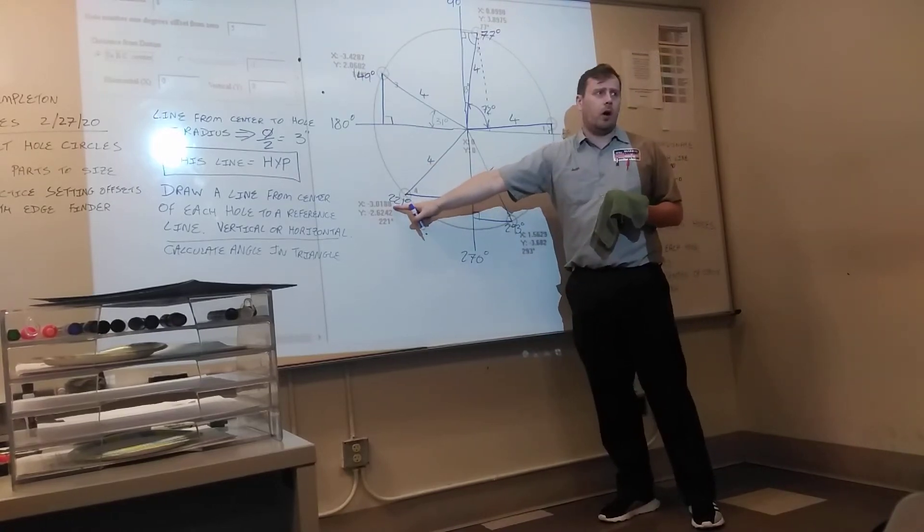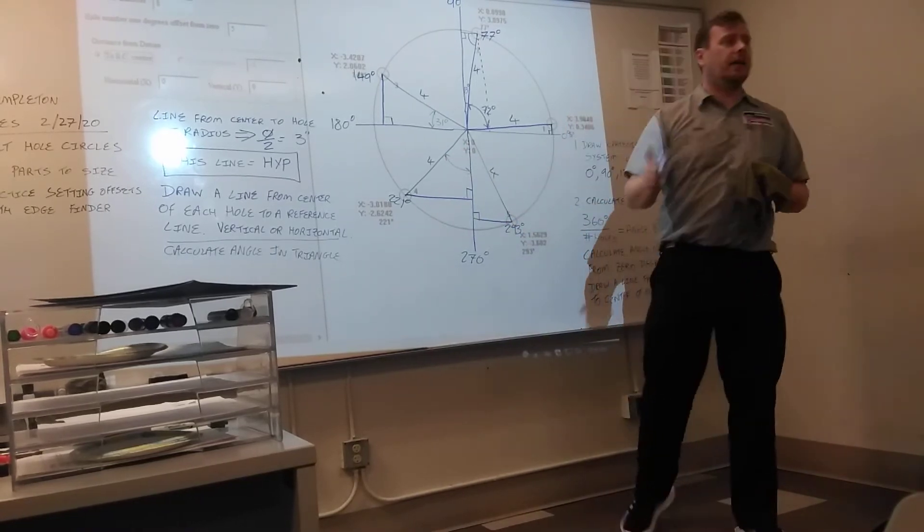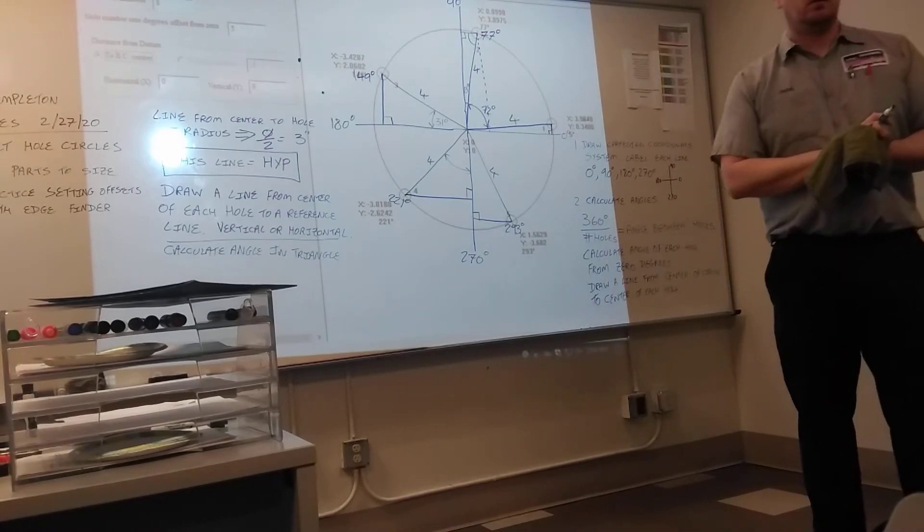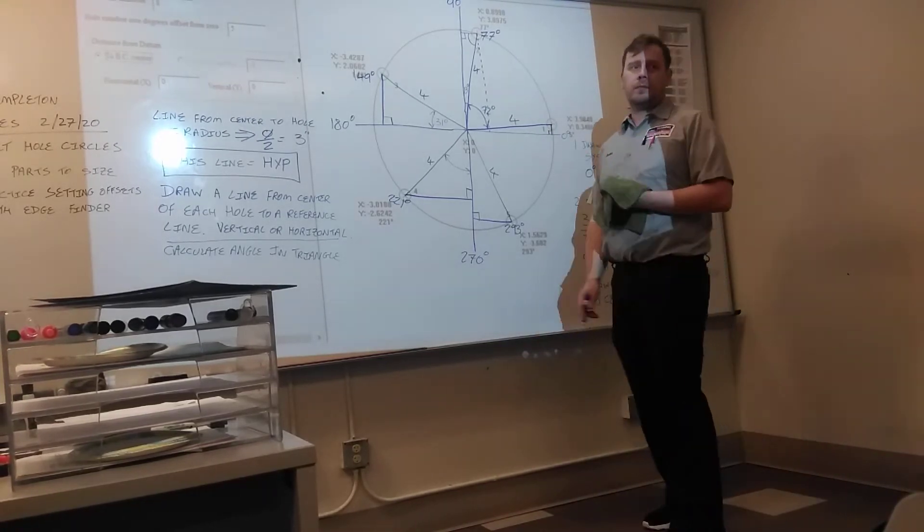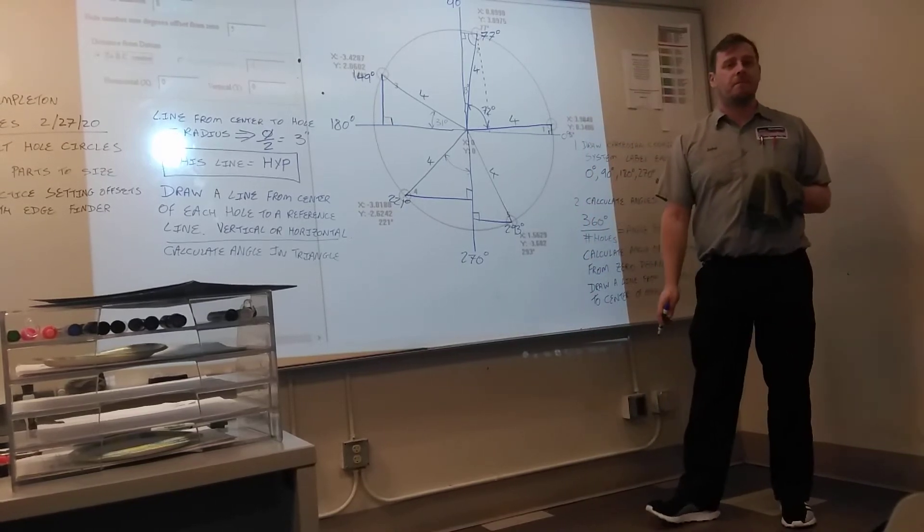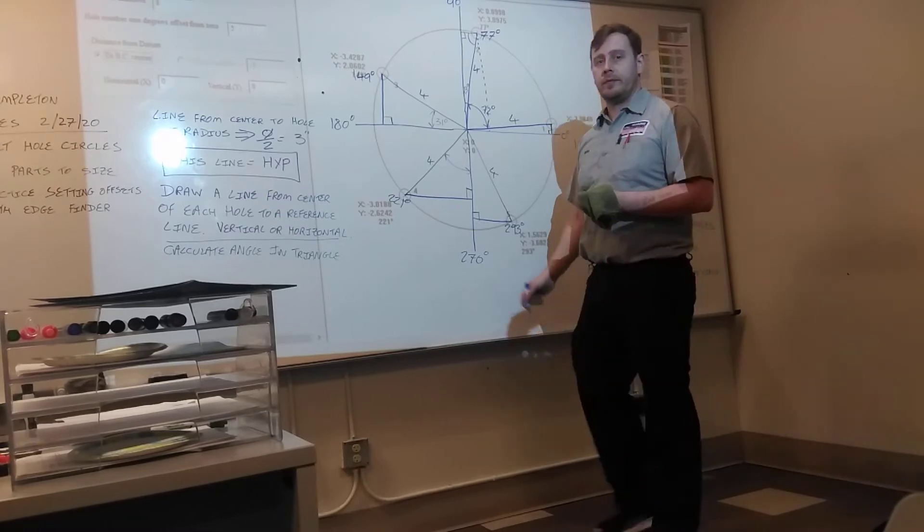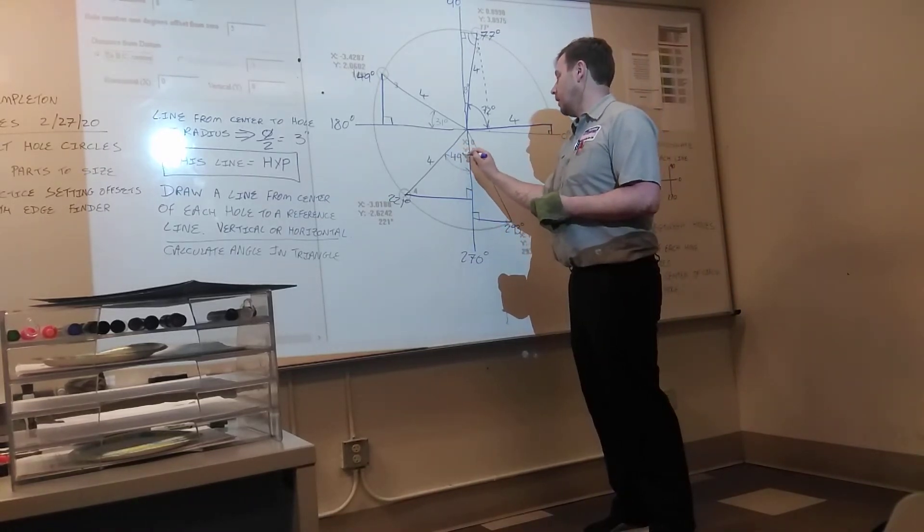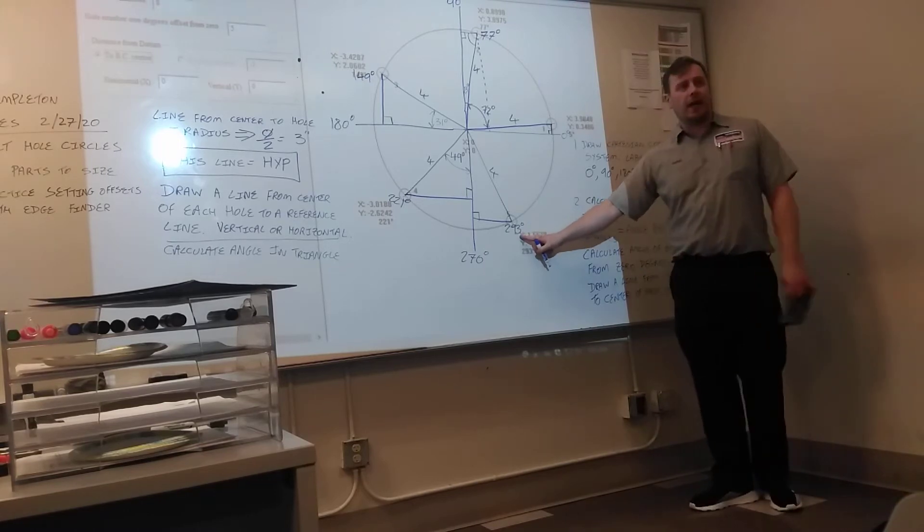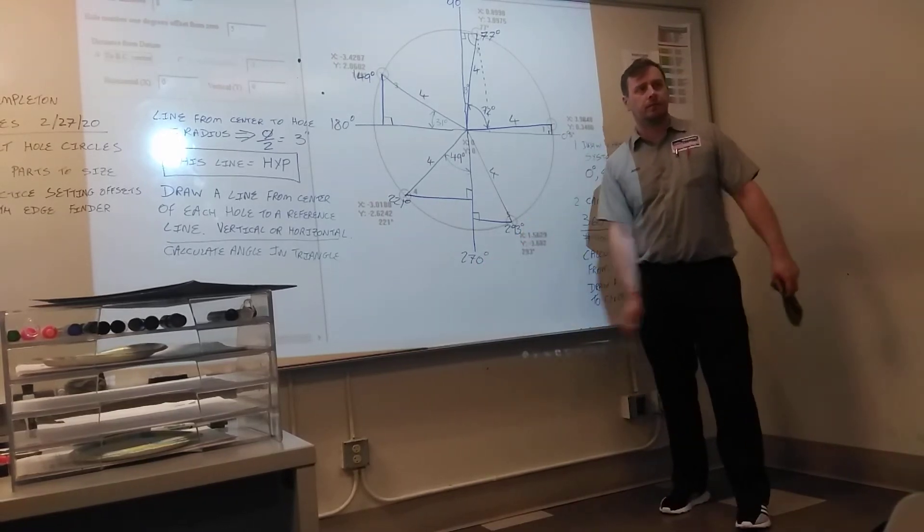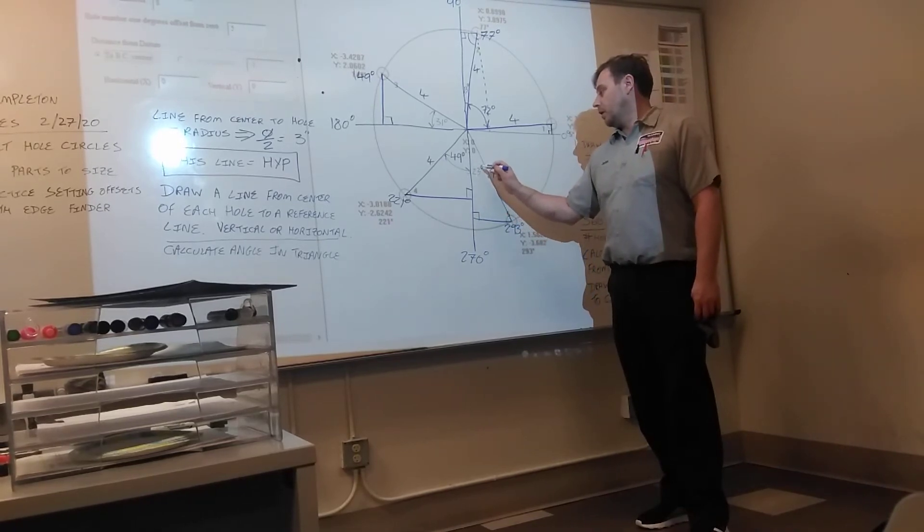Hole four. We got 221 and 270. You can't have a negative angle in a triangle. So I'll do the bigger number minus the smaller number. 270 minus 221. 49 degrees. And then 293 is at 270. 23 degrees.